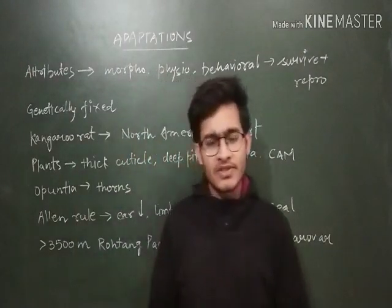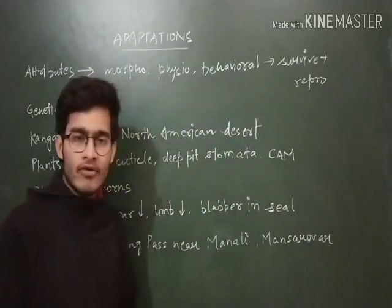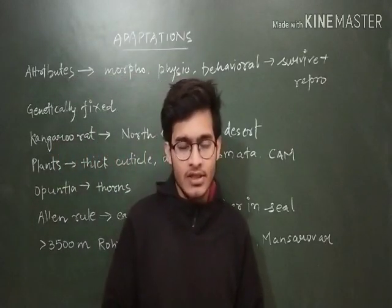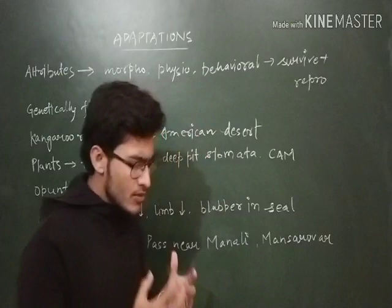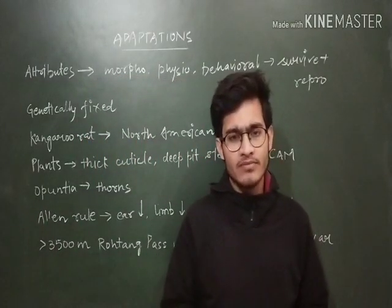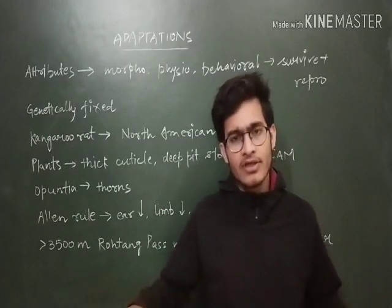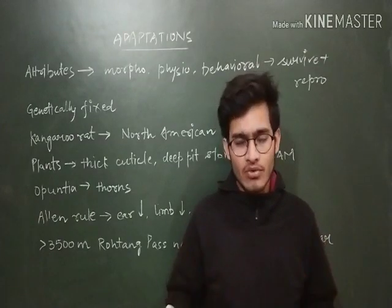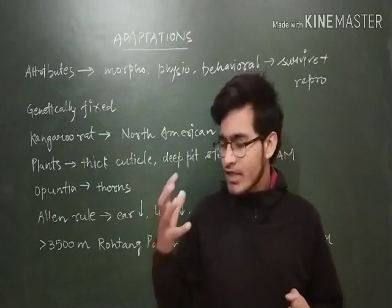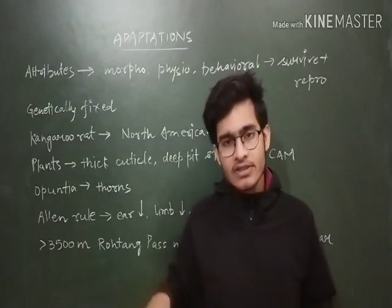Today we are going to discuss adaptations — conformers, regulators, partial regulators, migration, and suspension. In all these cases, organisms have strategies to cope with their surroundings. There are some attributes which are very important to live in a particular environment by making changes in their own body, so the organism adapts certain characters.